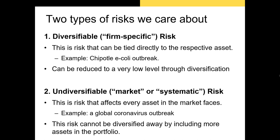The other type of risk is undiversifiable, or market, or systematic risk — it has many names. This undiversifiable risk, as the name implies, you can't diversify away. Every firm in the market is affected by this risk. No matter which stocks you hold, those stocks will always be affected by this risk. Some stocks will be affected a bit more, some a bit less, but this risk does not go away. Because you, as an investor, can't eliminate this risk, you should demand some additional compensation for exposing yourself to this risk.